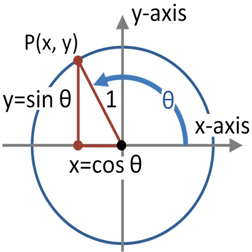These identities are useful whenever expressions involving trigonometric functions need to be simplified. An important application is the integration of non-trigonometric functions. A common technique involves first using the substitution rule with a trigonometric function, and then simplifying the resulting integral with a trigonometric identity.